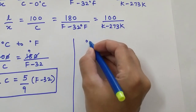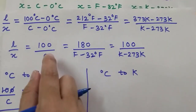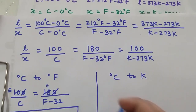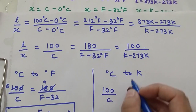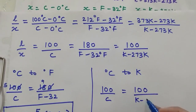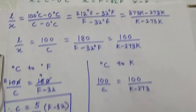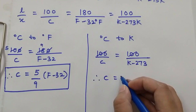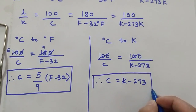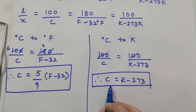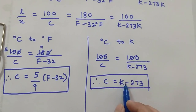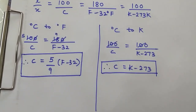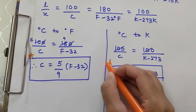In a similar way, to convert from degree Celsius to Kelvin, we equate the first and the third terms: 100/C = 100/(K − 273). Cancelling the 100 on both sides, we finally obtain: C = K − 273. Using this formula we can directly convert a quantity from degree Celsius to Kelvin or from Kelvin to degree Celsius. These are the two simple and very important formulas for converting temperature scales.